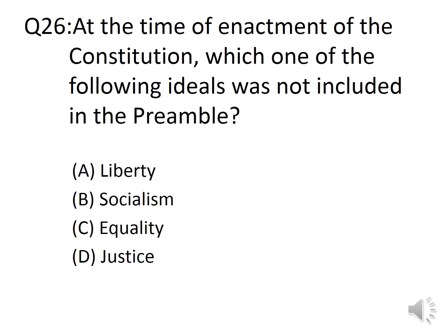Question 26: At the time of enactment of the Constitution, which one of the following ideals was not included in the Preamble? Options: A. Liberty, B. Socialism, C. Equality, D. Justice. The answer is Option B, Socialism. All the other three — Liberty, Equality, and Justice — were included in the Preamble.